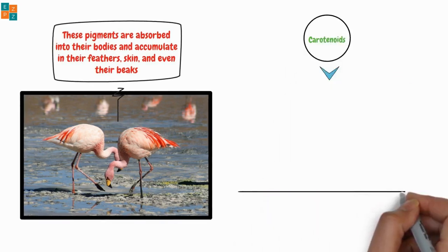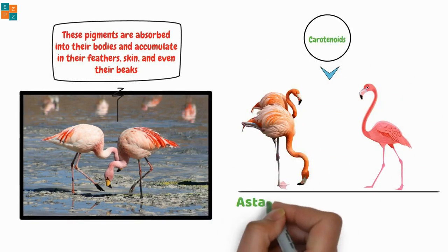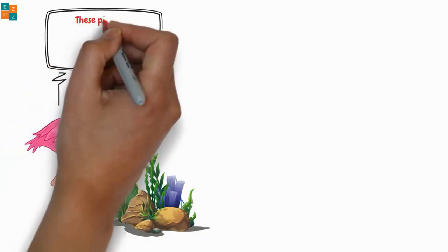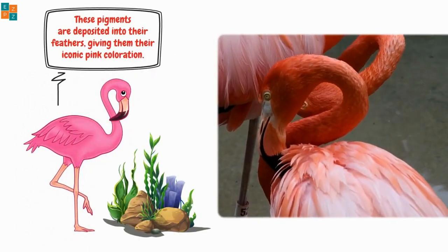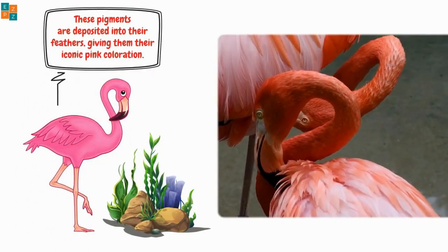The carotenoids, particularly ones like beta-carotene, are transformed into pink and orange pigments called astaxanthin and canthaxanthin. As flamingos digest their food, these pigments are deposited into their feathers, giving them their iconic pink coloration. The more carotenoid-rich food a flamingo consumes, the brighter its pink coloration tends to be.